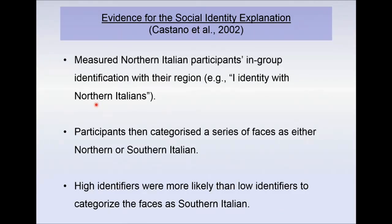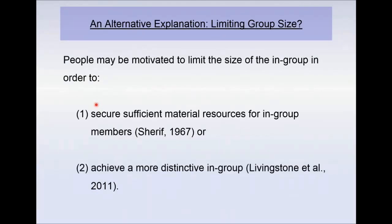The higher you identified, the more likely you were to kick out ambiguous faces — those you weren't sure were Northern or Southern Italian — from your group. This fits the logic of the social identity explanation: you're doing it for the sake of your group, your identity, and your self-esteem. However, this research does leave important questions unanswered. Although we now know that people are more likely to show the in-group over-exclusion effect when they identify with their in-group, it remains unclear exactly why they show that effect. The assumption that people protect the in-group's positivity to meet their need for self-esteem has never been tested directly.